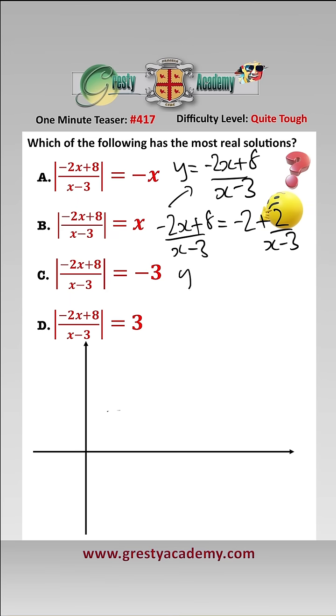So therefore we can rewrite that as y plus 2 equals 2 over x minus 3, which is basically y equals 2 over x translated by 3 to the right and 2 down.